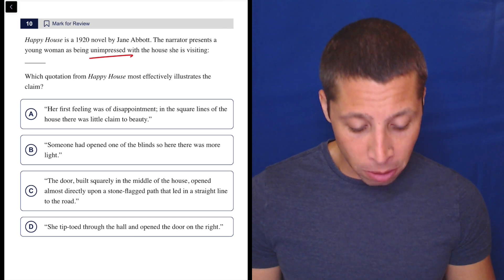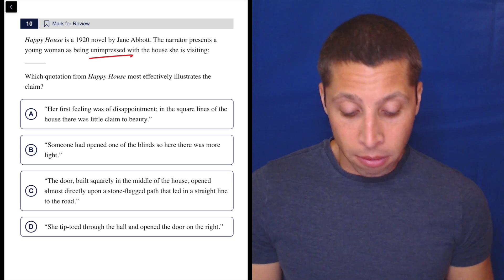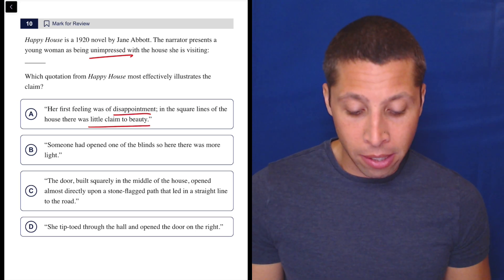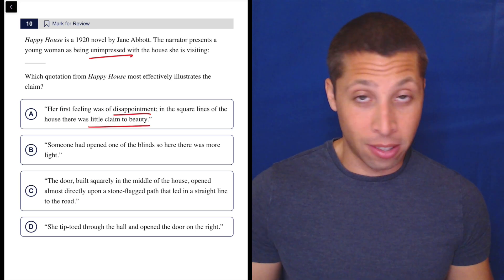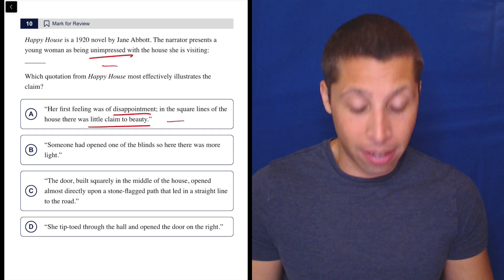Option A: Her first feeling was of disappointment. In the square lines of the house, there was little claim to beauty. Yeah, well, disappointment, little claim to beauty. Sounds like she's not happy with the house. It sounds bad, right? So even just in a dumb summary kind of connotation way, yeah, negative.